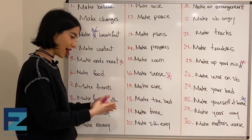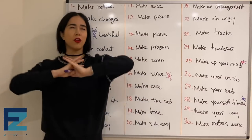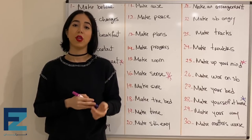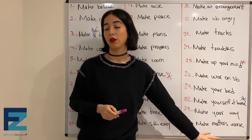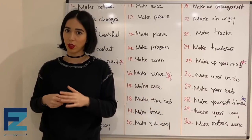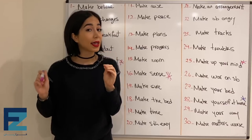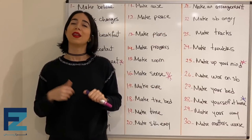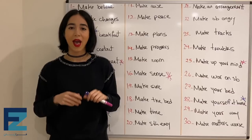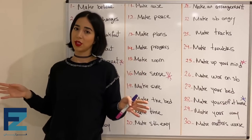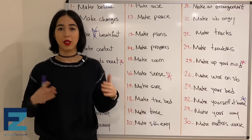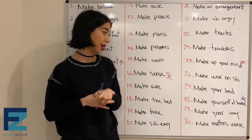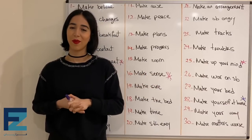این هم از 90 تا collocation فوق‌العاده خوب و پرکاربرد برای make. درس هنوز تموم نشده — الان قرار هستش که بریم روی یه فایل PDF که تمامی این collocation‌ها رو با یک مثال برای هر کدوم نوشته. 90 تا رو لازم نیست یکجا یاد بگیرین — حتی اگه 10 تا را عمیق یاد بگیرید و مثال بنویسید کافیه. حتماً قسمت PDF رو ببینید.